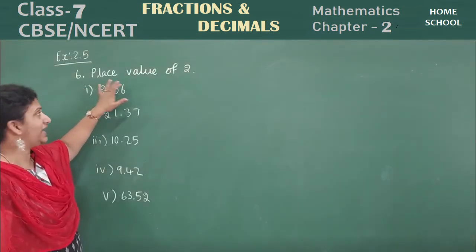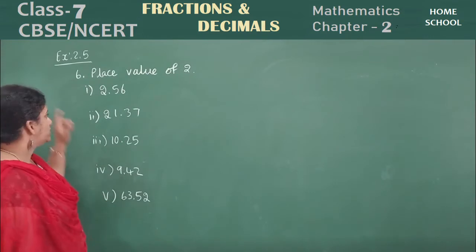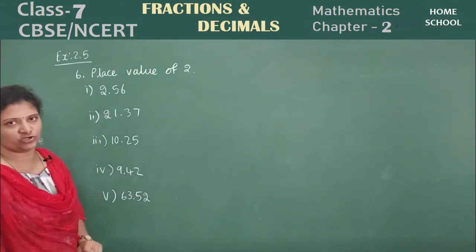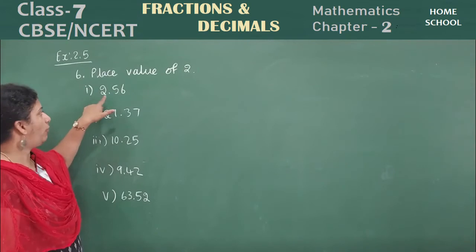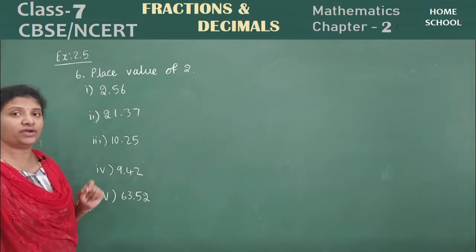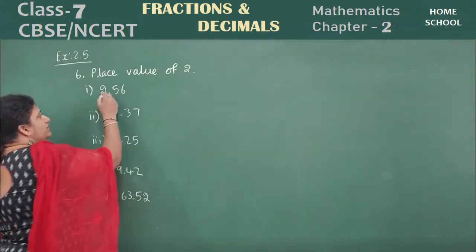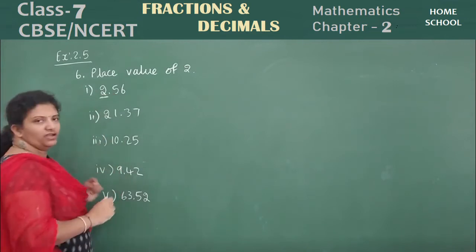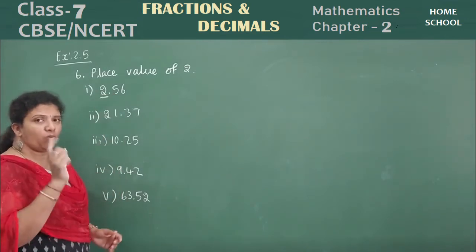Your sixth main: Find the place value of 2. So you have 5 sub-questions in this. First one, 2.56. How can you see the place value? This is 2 they are asking here. 2 is in which place? Ones place.